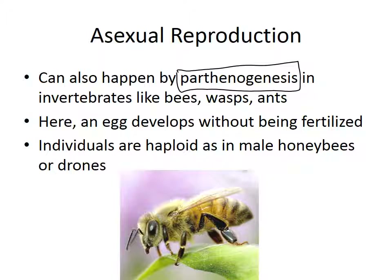Asexual reproduction can also occur by parthenogenesis — there's actually an egg that is never fertilized but manages to grow into a full-fledged individual. The individual is not fertile but looks perfectly full-fledged. This happens in invertebrates like bees, wasps, and even ants. The individuals are haploid — they only have half the genome or half the set of chromosomes. Male honeybees, for example, are drones and they are haploid individuals.